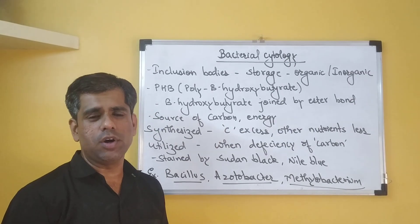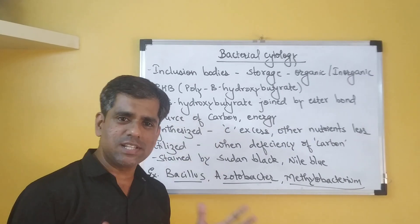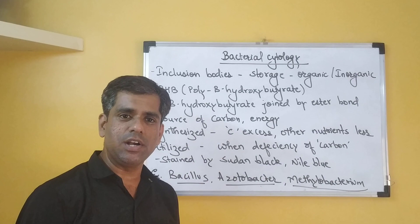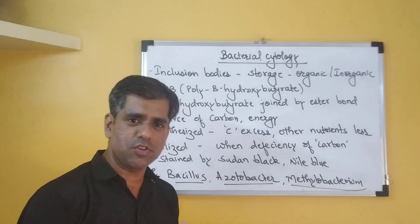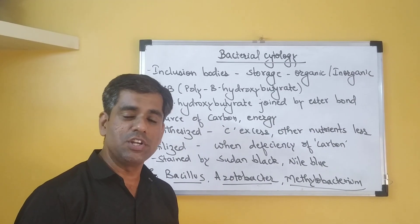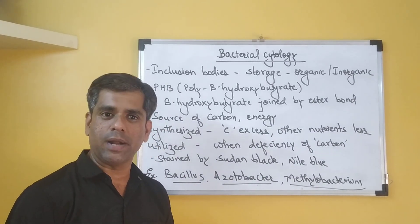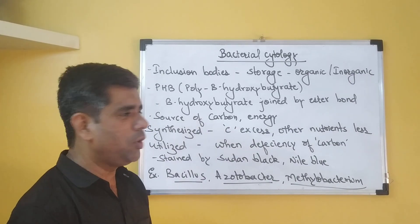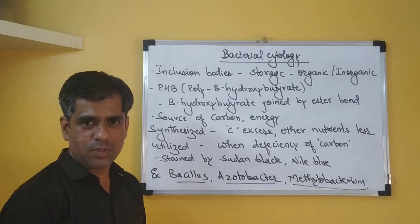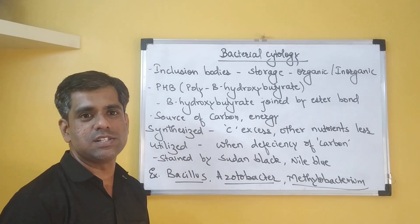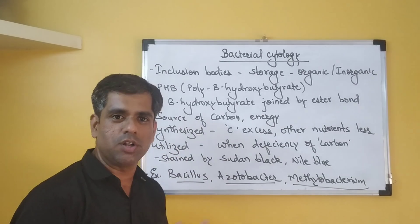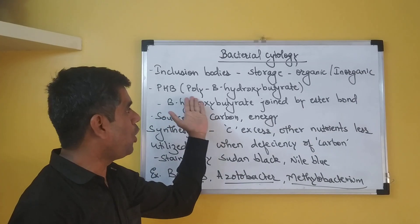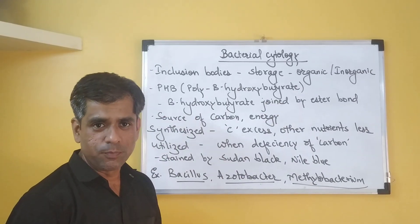The occurrence of these inclusion bodies is not universal in a prokaryotic cell. Their occurrence will depend on the species of the bacteria and also on the nutritional status of that particular bacterial cell. The inclusion body we'll be talking about today is the PHB — one of the common inclusion bodies much talked about in the case of bacterial cells.